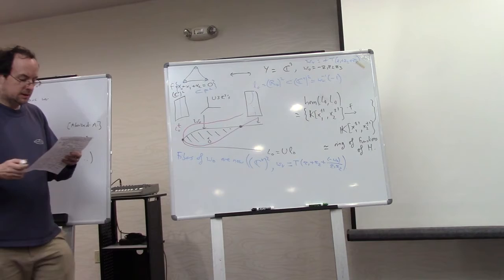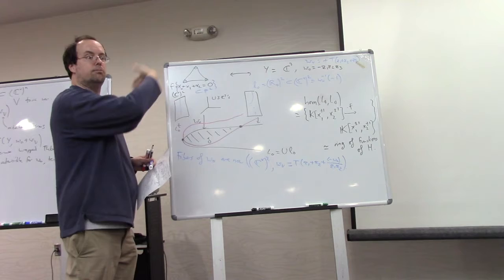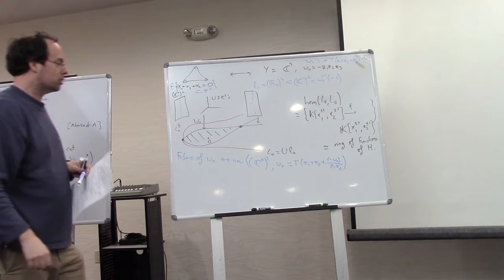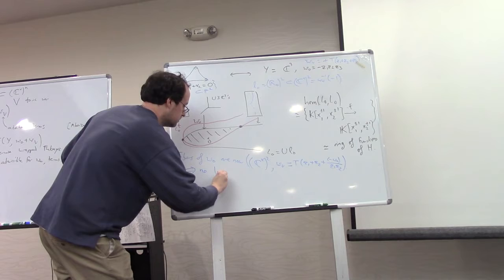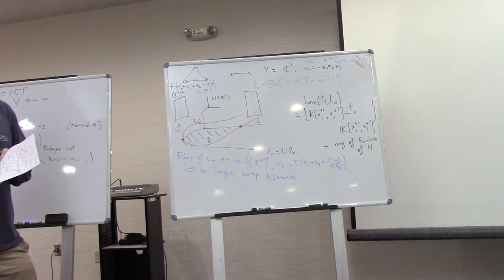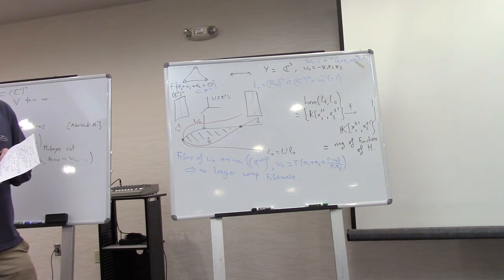So in general, this is general phenomenon. The fibers of W0 will end up being the mirror to the toric variety V in which we are now working. And so now the way that this modifies our construction of the Fukaya category is that we no longer wrap fiber-wise. And of course, we impose admissibility with respect to this potential, but I was already doing that for purely technical reasons before anyway.